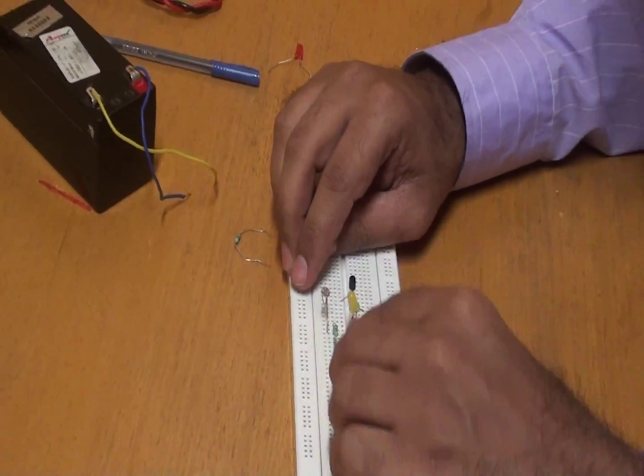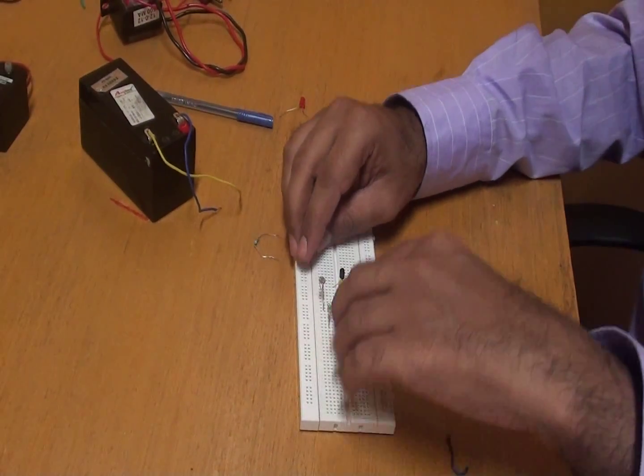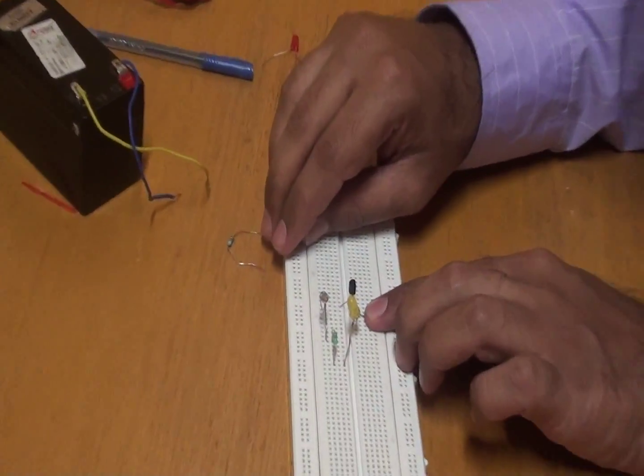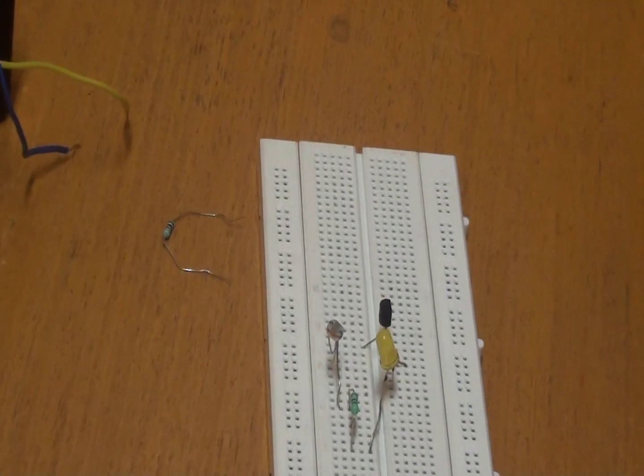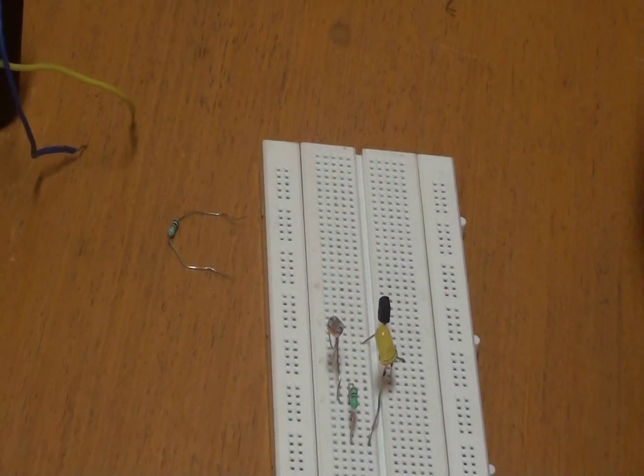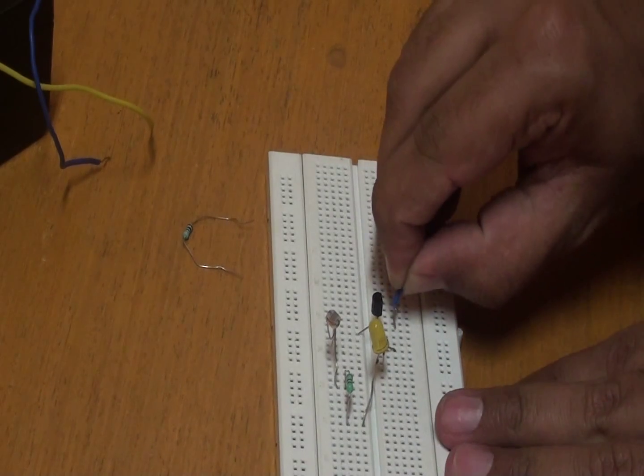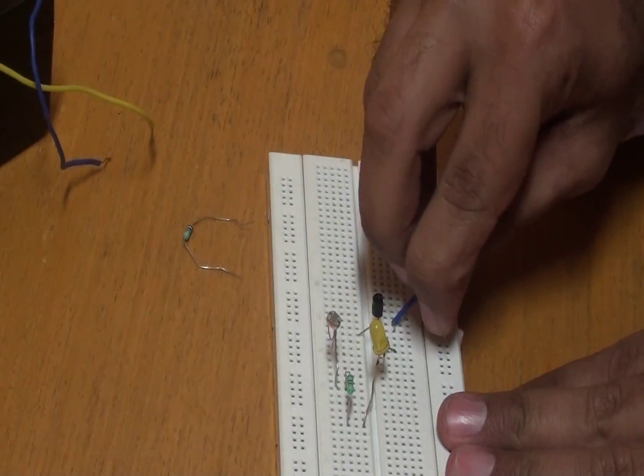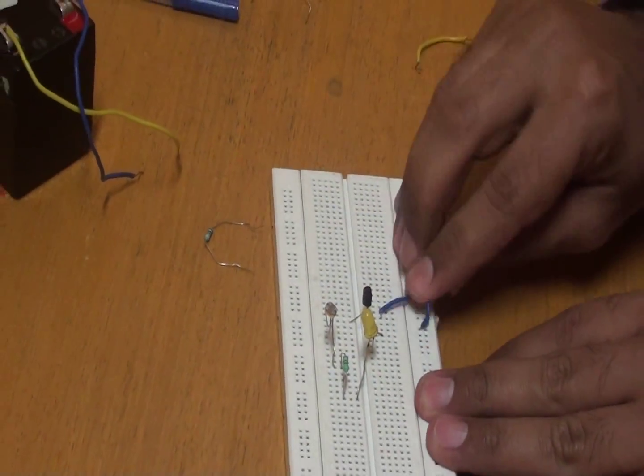So now I have connected the positive to one side of the resistor and the negative to the collector of the BC547. So now this emitter as I told is given to the ground.